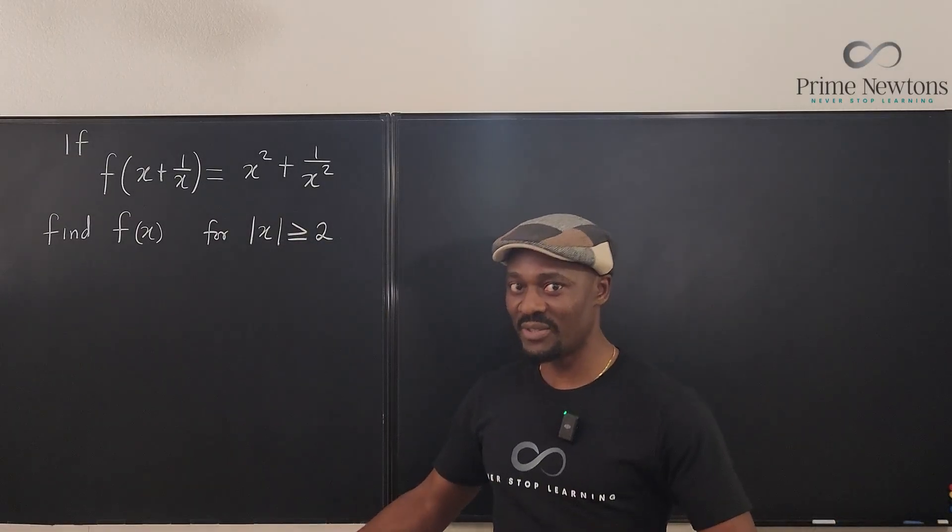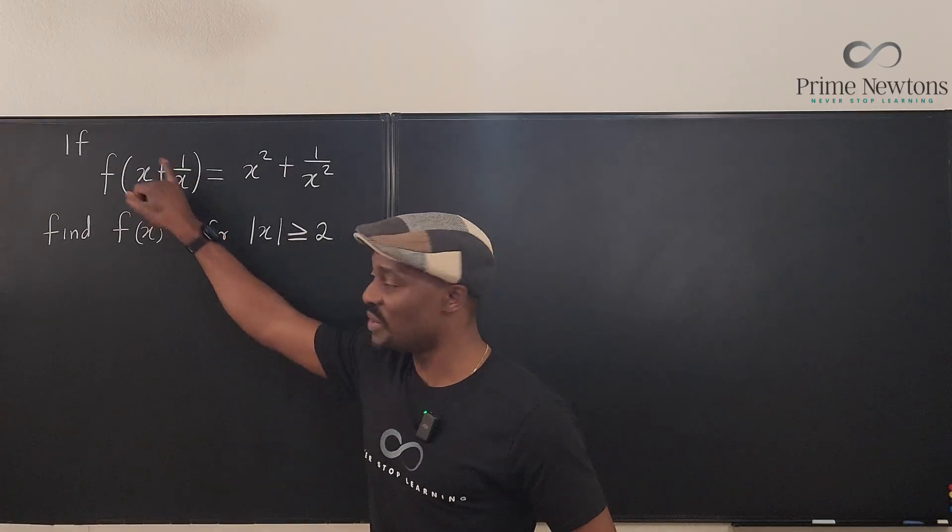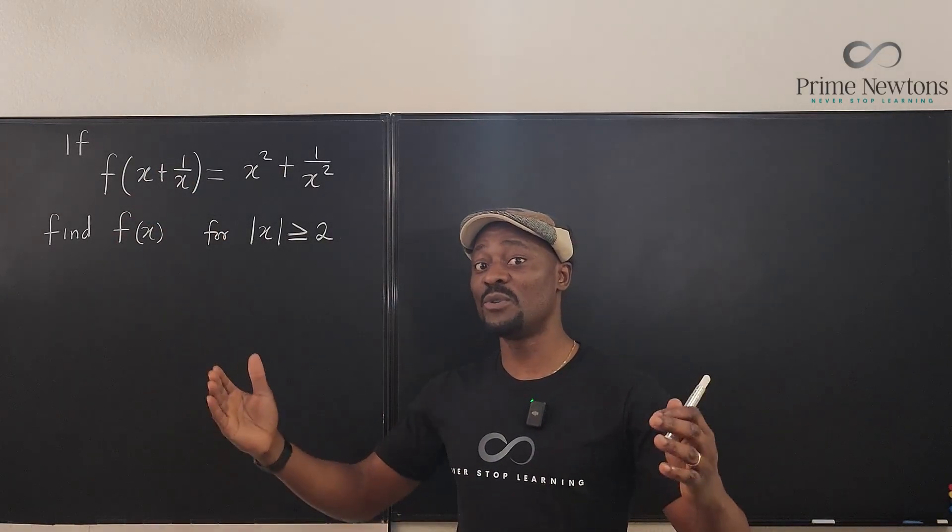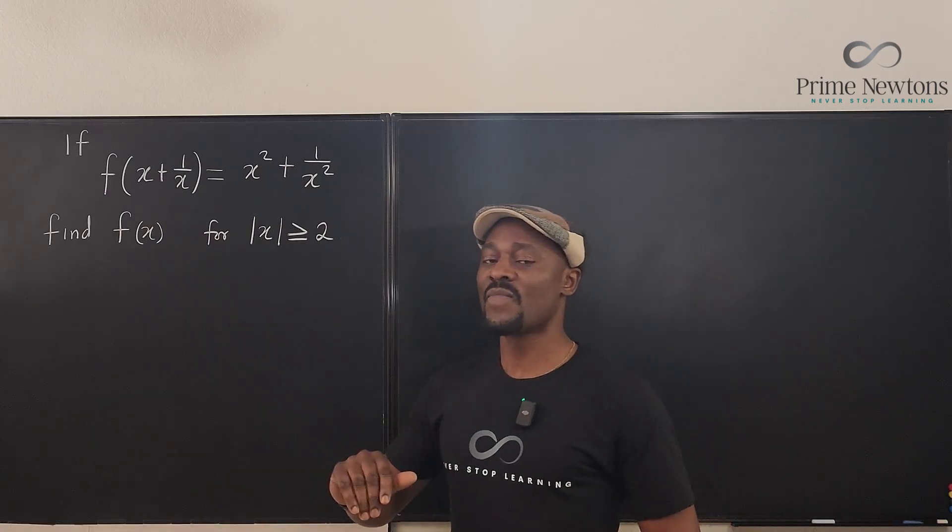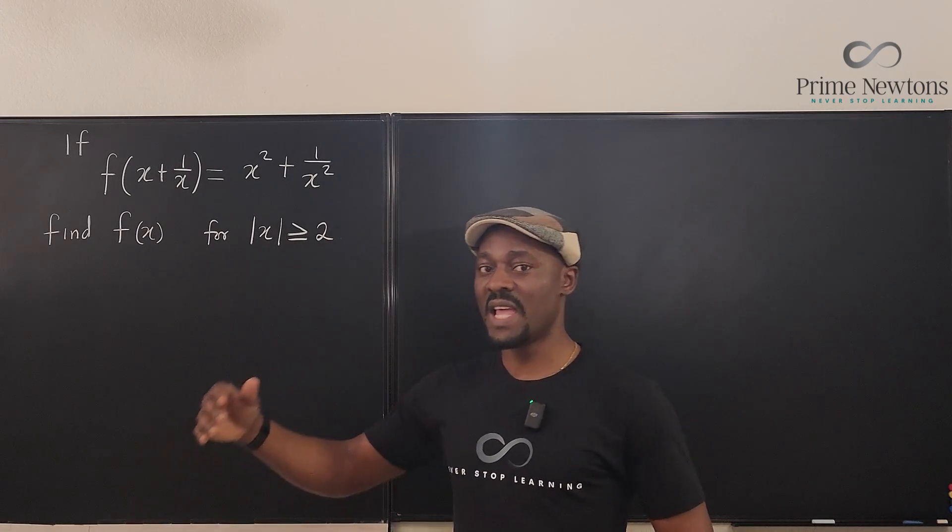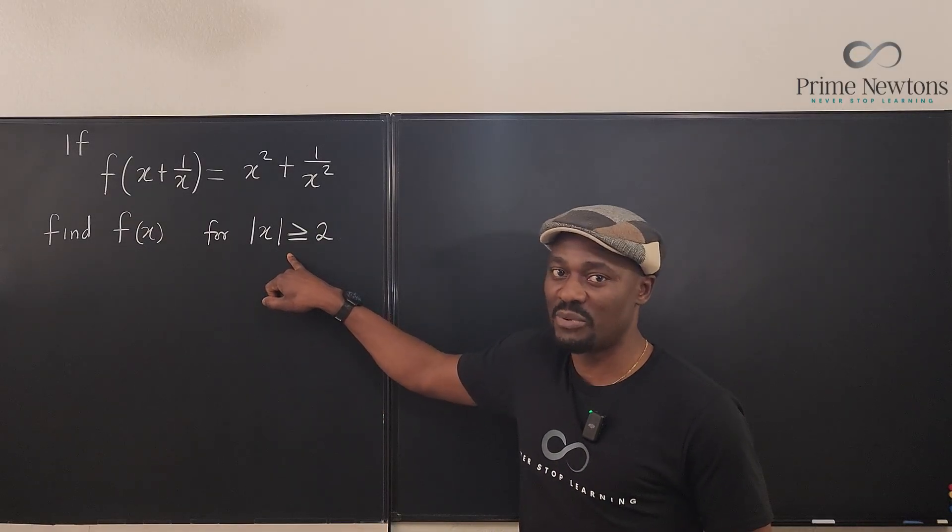Typically my recommendation is just do a dummy substitution, replace this with t, and then when you're done, just switch the t back to x. That's what I would recommend that you do. But in the course of doing that, you're going to encounter a problem, and this provision was made so you don't have to deal with that problem.